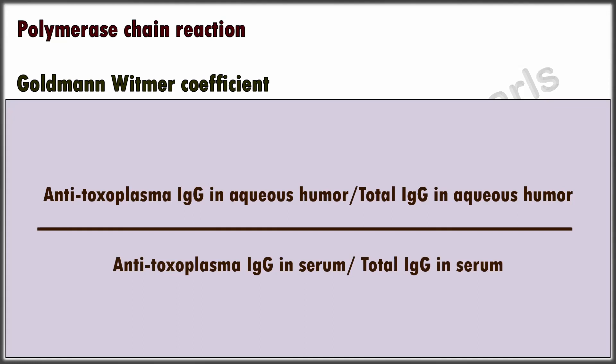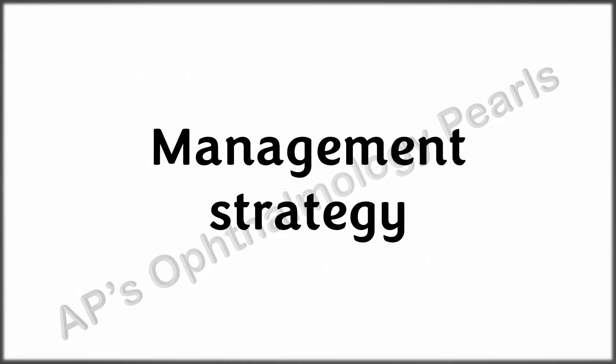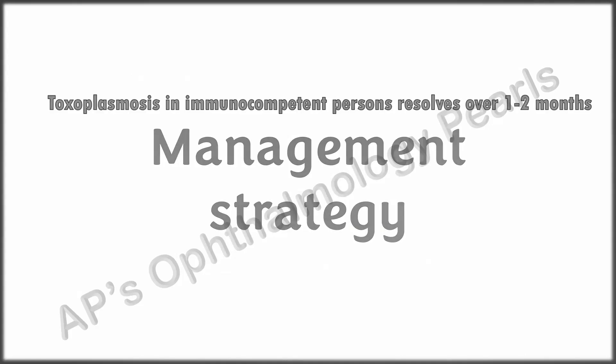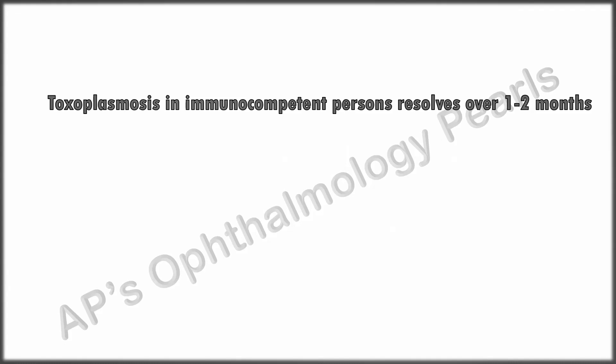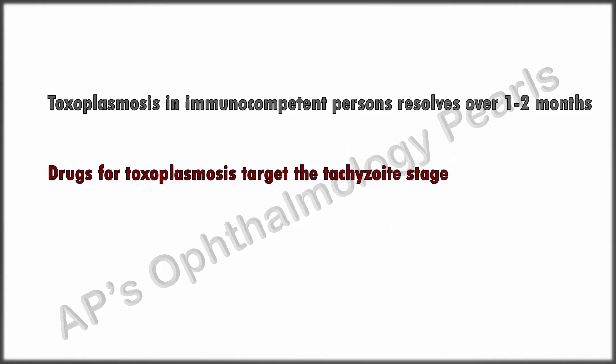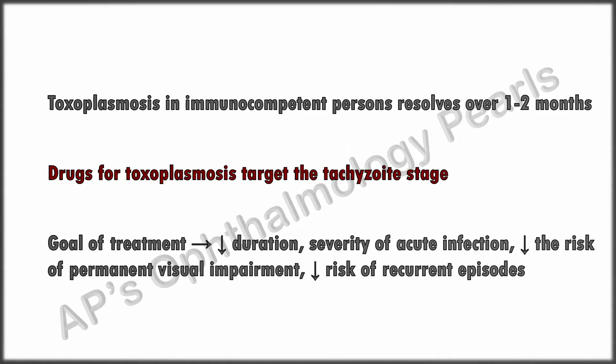PCR is also useful for amniotic fluid testing after 18 weeks of gestation for prenatal diagnosis of congenital toxoplasmosis. Regarding treatment, toxoplasmosis in immunocompetent persons resolves over one to two months even without treatment, and drugs are effective only against the tachyzoite stage. The goals of treatment are limiting parasite multiplication during active retinitis, limiting duration and severity of symptoms, reducing the risk of permanent visual impairment, and reducing the risk of recurrent episodes.